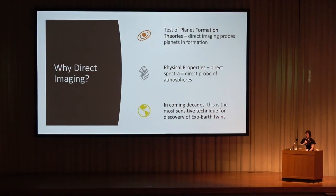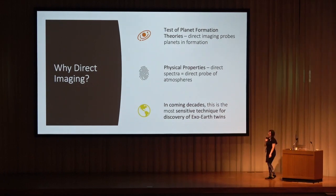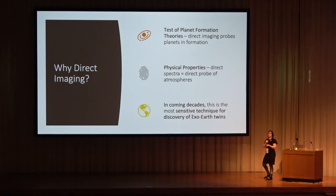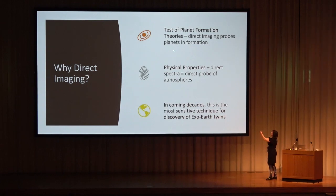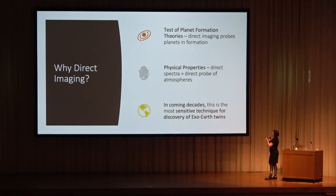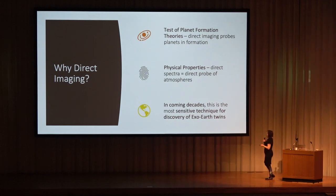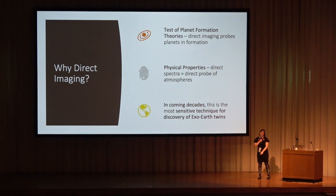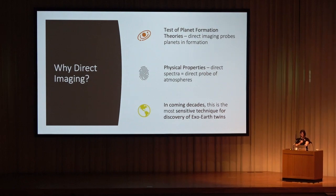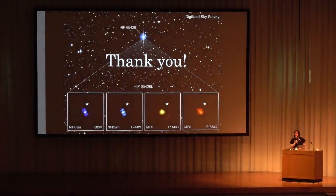In conclusion, returning to where we began: why you should care. Looking at young giant planets close to their epoch of formation is a way of testing planet formation theories. We can start really understanding the atmospheres of exoplanets via these young giant planets. And in the longer term, direct imaging is the technique that will probably yield us our first exo-Earth twin. Thank you, happy to take questions.